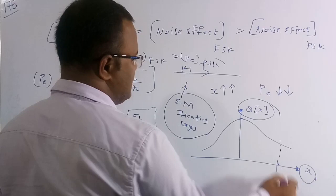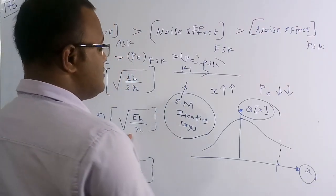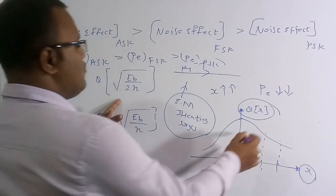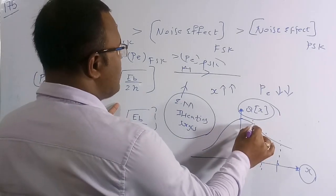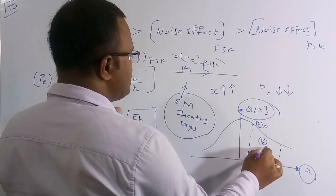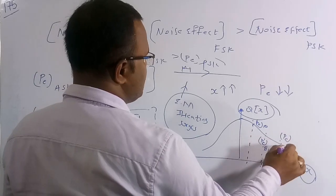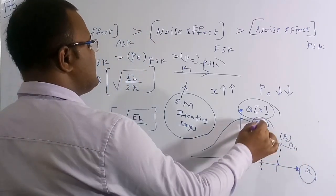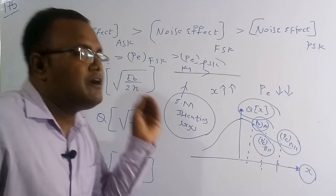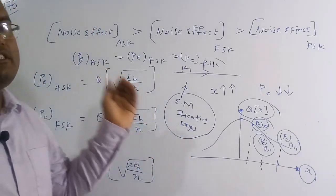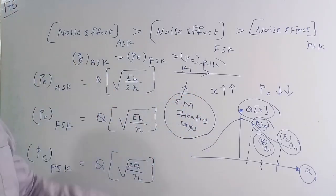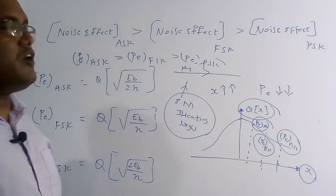In summary: the noise effect is highest in ASK, then FSK, then PSK. Amplitude is the main criterion in ASK — if external noise changes the amplitude, detection errors occur. Therefore ASK (also called on-off keying) is most susceptible to noise among the digital modulation schemes. This is the relation: Pe(ASK) > Pe(FSK) > Pe(PSK).